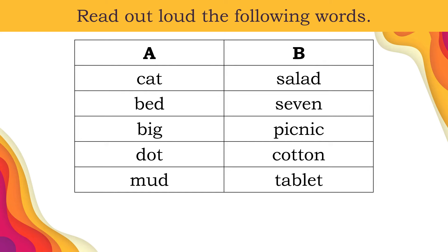Now, let us examine the list of words in column A and column B. How many syllable or syllables are there in each word under column A? Very good! Words in column A has only one syllable.